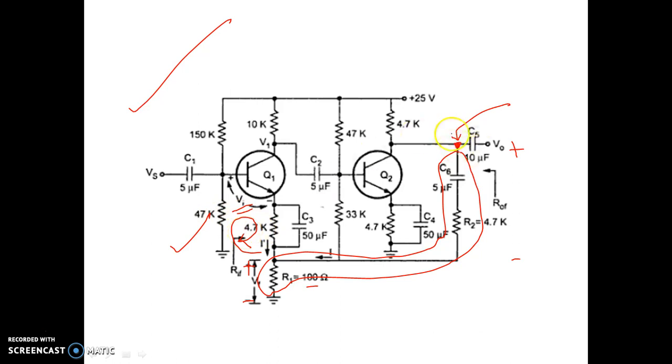And as the node is common between the starting point of the feedback and the output, this is voltage sampling. So we can say the feedback topology used for this two-stage amplifier is voltage series feedback topology. Clear?